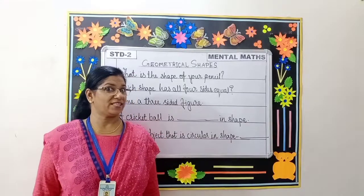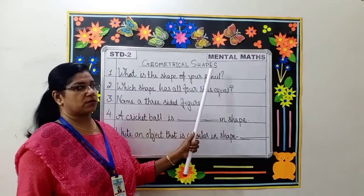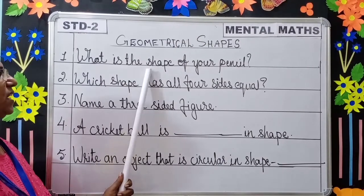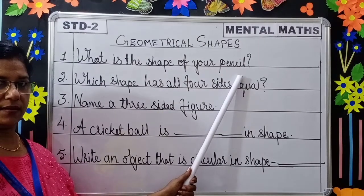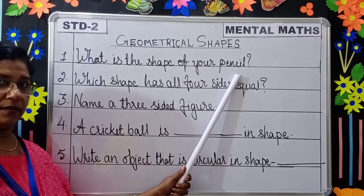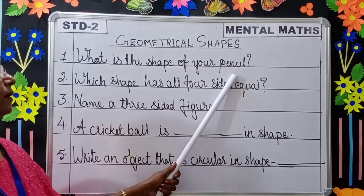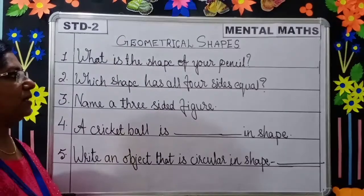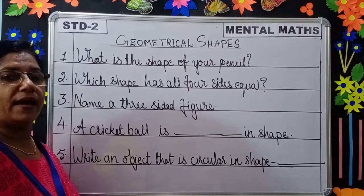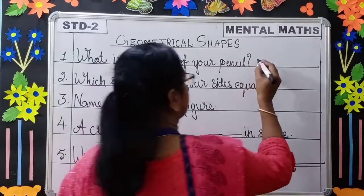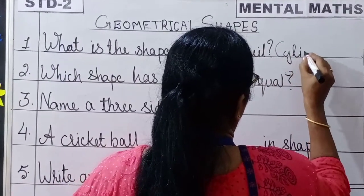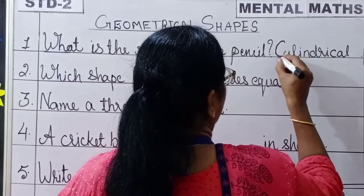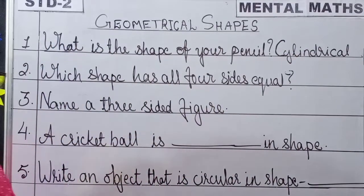Moving to the next topic, children — geometrical shapes. Question number one: what is the shape of your pencil? Shape means the outer boundary of any object. The shape of your pencil is cylindrical — a pencil is cylindrical in shape.